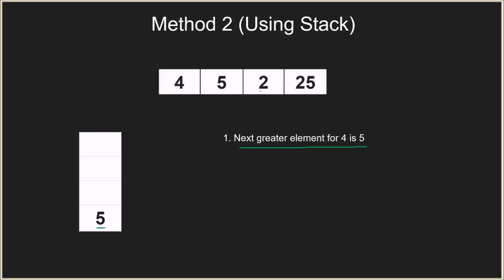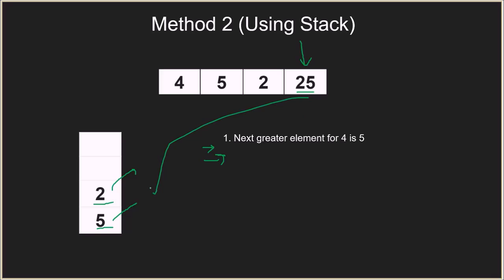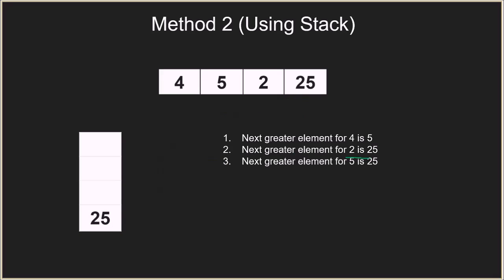Next is 2. We compare 5 with 2 — since 2 is smaller than 5, we push 2 onto the stack as well. Now next becomes 25. Since 25 is greater than both 2 and 5, we first pop 2 and print that the next greater element for 2 is 25. Then we pop 5, compare with 25 — 5 is smaller — so we print that the next greater element for 5 is 25. Finally we push 25 onto the stack.